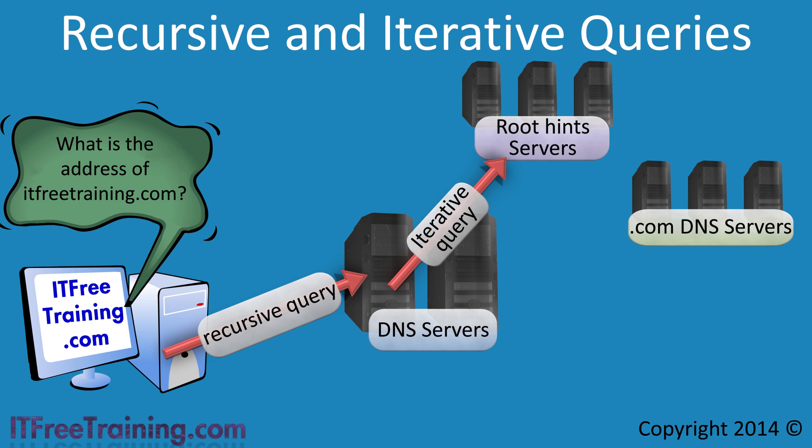If the root hints servers were configured to resolve recursive DNS requests, you could imagine how many requests the DNS servers could potentially receive, as everyone on the internet could use the root hints server to resolve DNS names. Because of this system of recursion, iterative queries and DNS server caching, the root hints server only receives a small percentage of the overall DNS traffic on the internet, ensuring that they are always available.